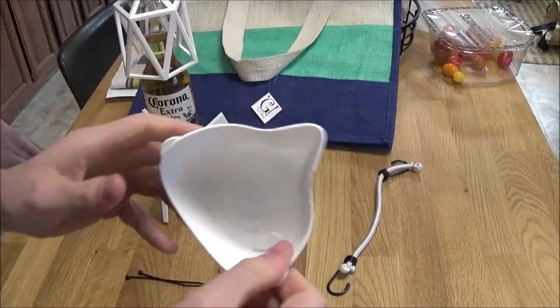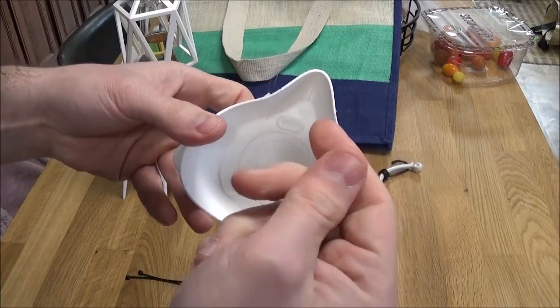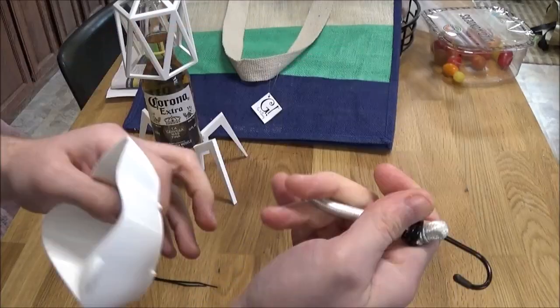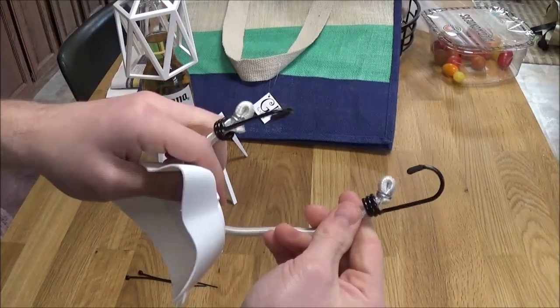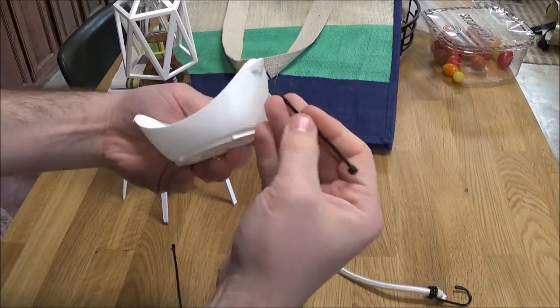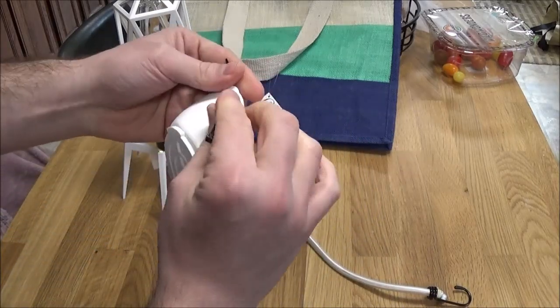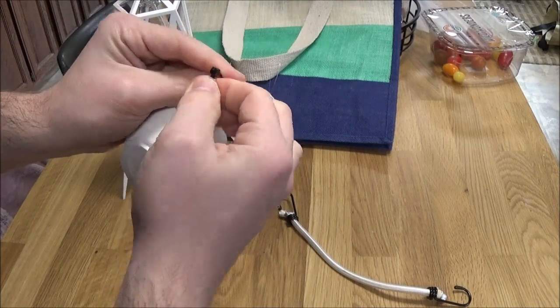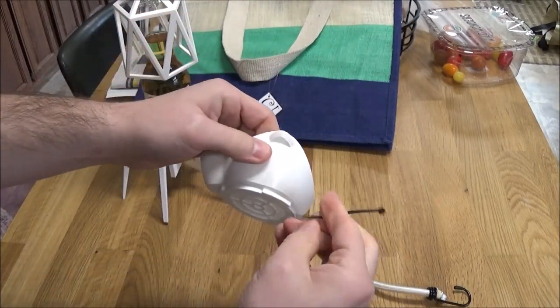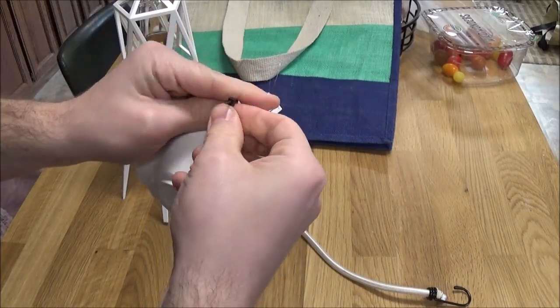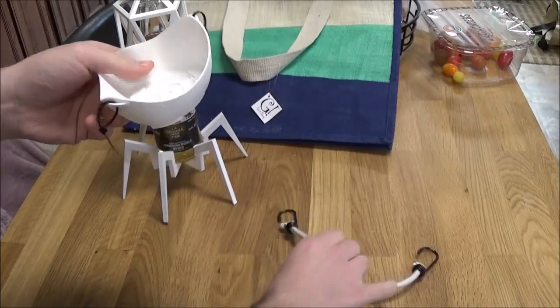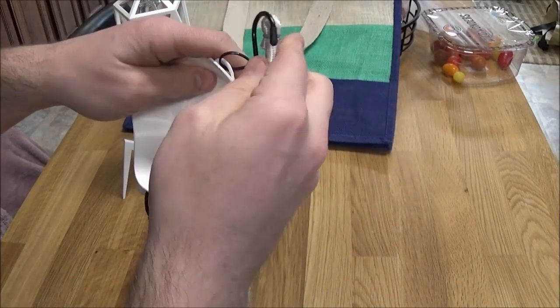And then for the strap you can 3D print like a cinch and then use like string or something and cinch it down. But I have some towing bungees here I'm going to use. I'm going to put the zip ties through here because otherwise it wouldn't fit through the hole, which you could design this to work. But I'm not going to do that.